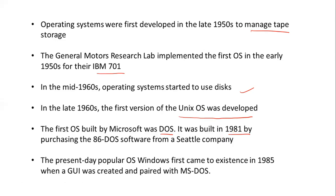Microsoft built DOS in 1981 by purchasing the 86-DOS software from a Seattle company. The present-day popular operating system, Windows, first came into existence in 1985, when a graphical user interface was created and paired with MS-DOS. Previously, Microsoft's operating system ran on DOS without a GUI, but in 1985 the GUI was paired with MS-DOS to create the full-fledged Windows operating system.